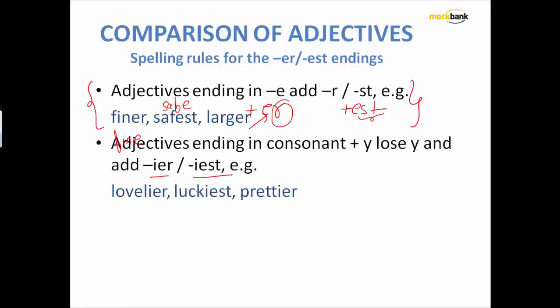We have got lovely, lucky, and pretty. Y for sure will get eliminated, and for comparative we are going to add er and for superlative we are going to add iest. So lovely is lovely, lovelier, and loveliest. Lucky is lucky, luckier, and luckiest. Pretty, prettier, and prettiest. I hope that you are getting the rule.